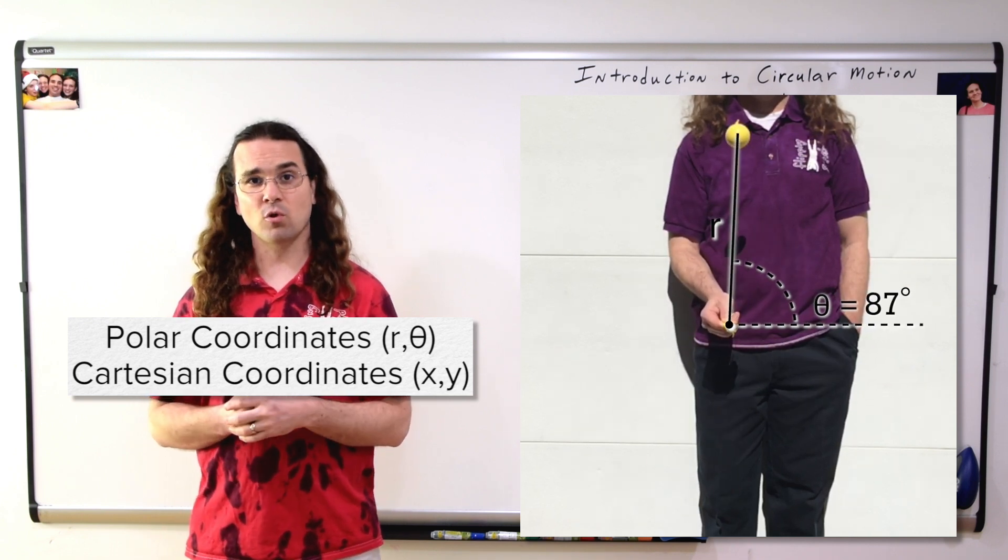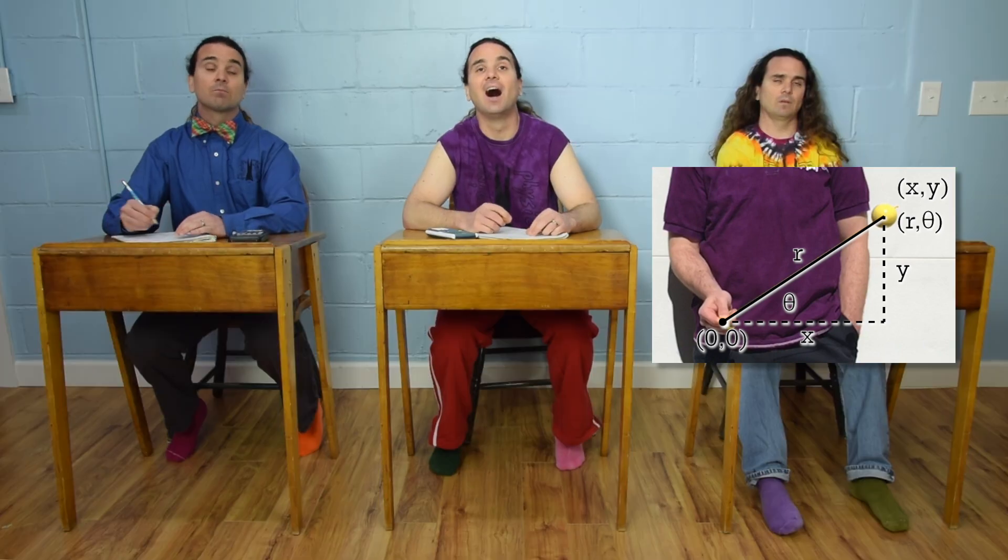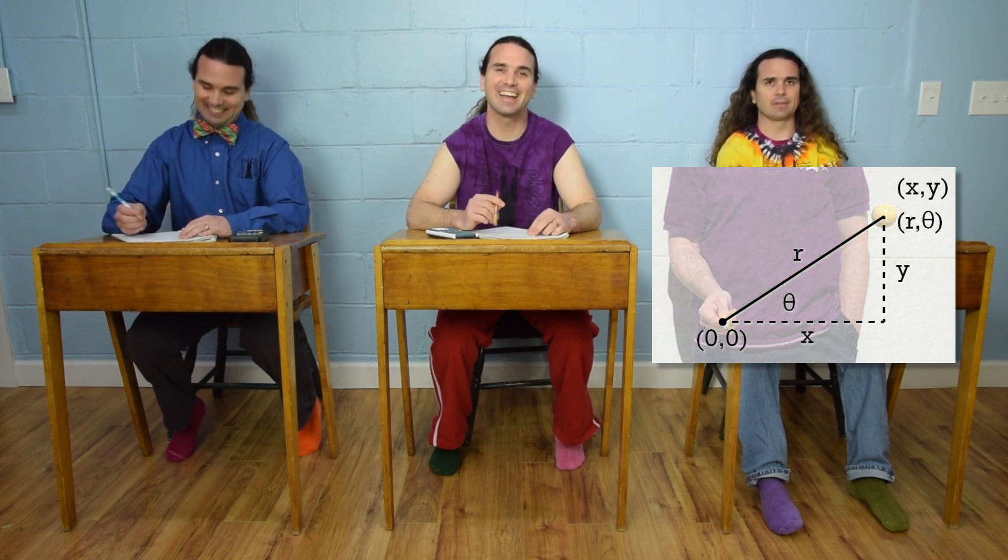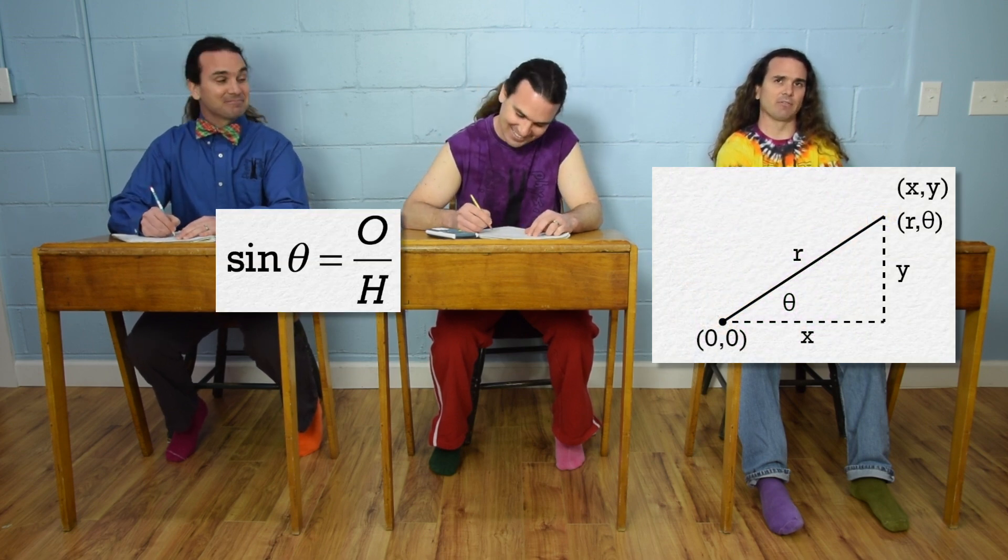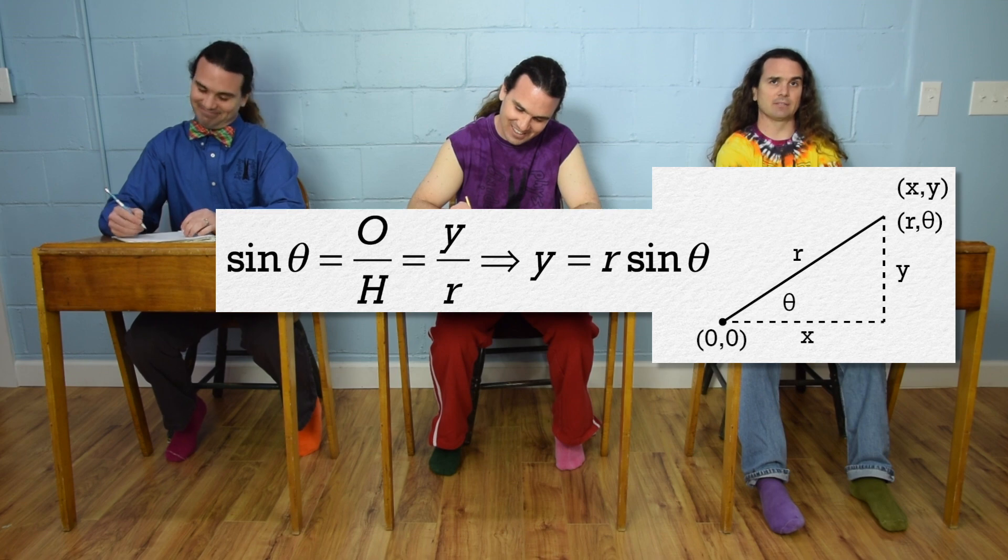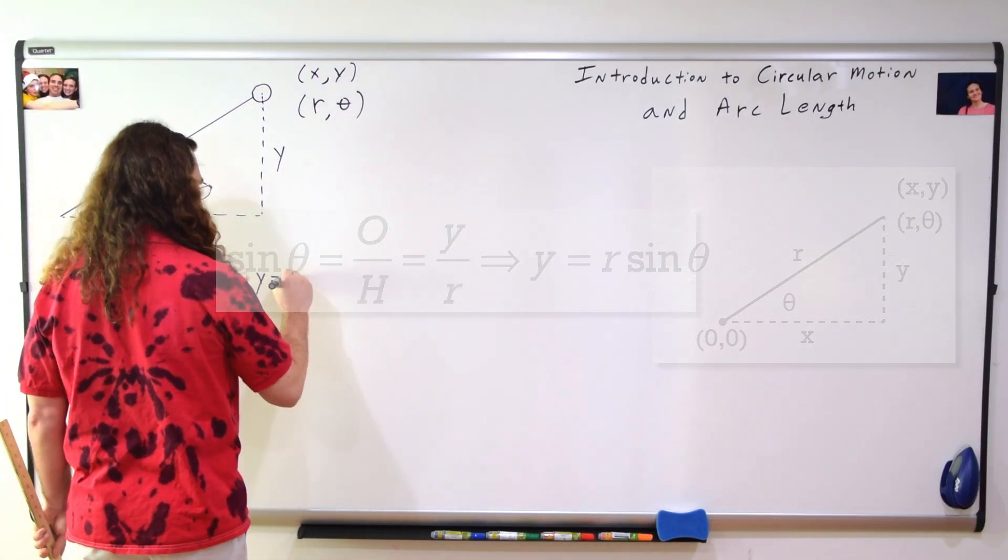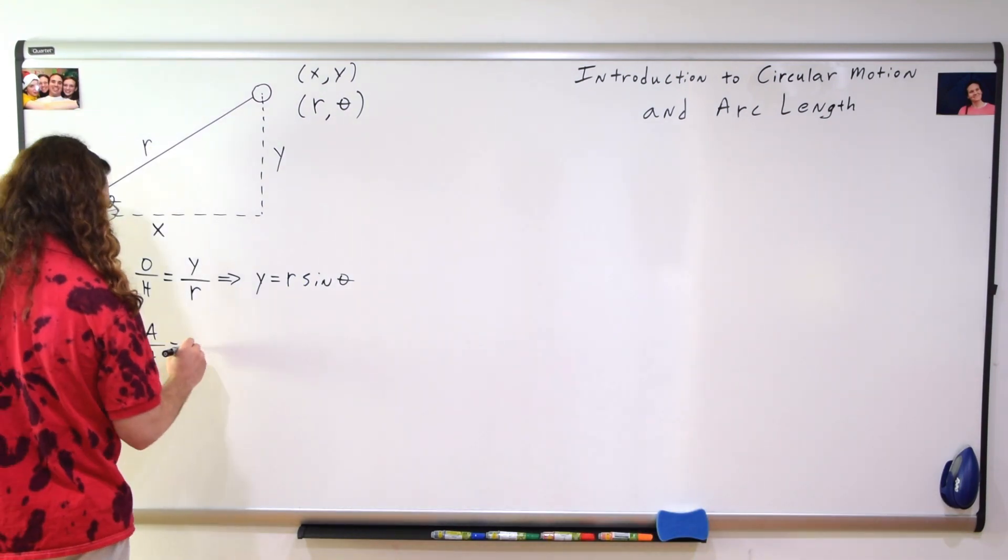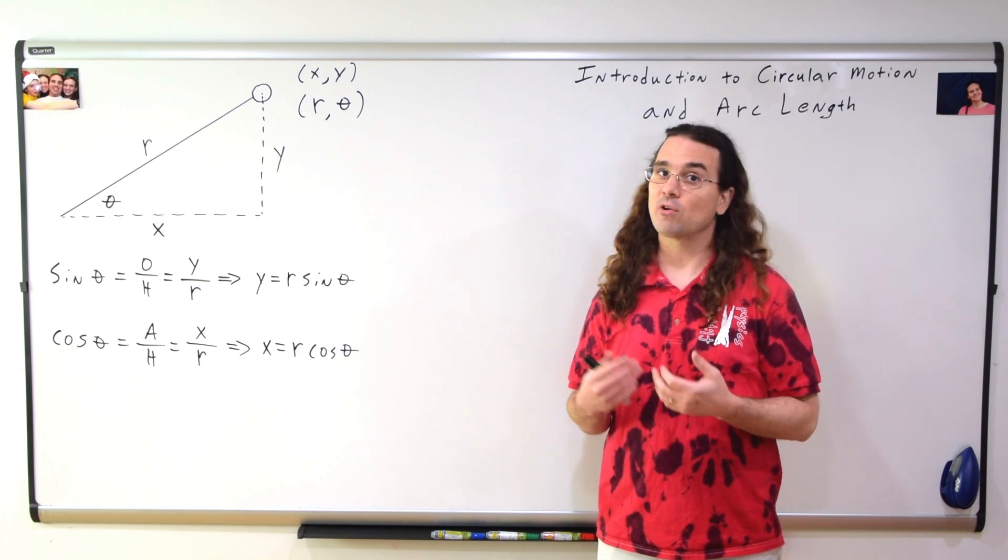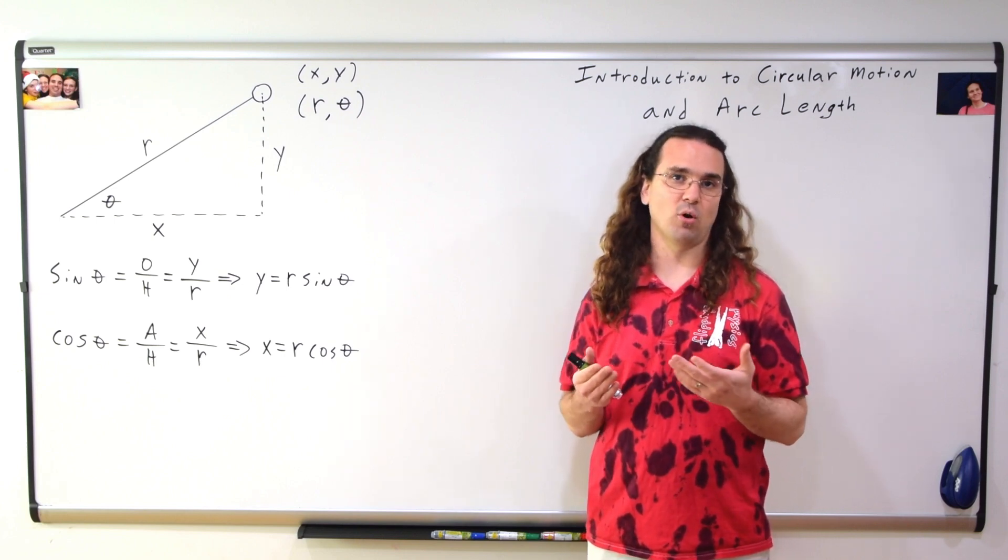Now, we can relate Cartesian coordinates and polar coordinates using trig functions. Bo, how do we do that? Sine theta equals opposite over hypotenuse or y over r and multiply by r to get y equals the radius times the sine of the angle. And we can do the same thing with cosine. Cosine of theta equals adjacent over hypotenuse or x over r and therefore x equals r times cosine theta. This is how we can go back and forth between Cartesian and polar coordinates.